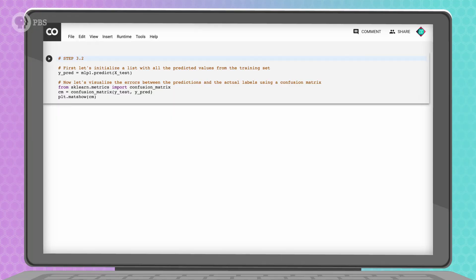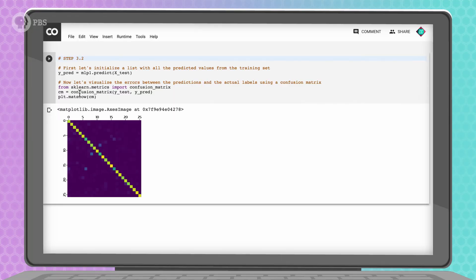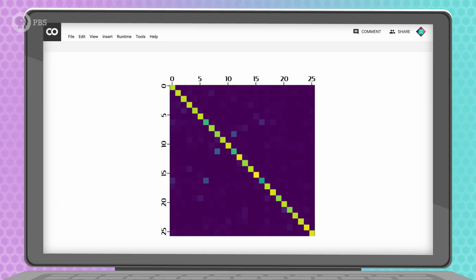To see where the network made most of its mistakes, we can create a confusion matrix, which we made in step 3.2. The color of each cell in the confusion matrix represents the number of elements in that cell, and a brighter color means more elements. The rows are the correct values, and the columns are the predicted values, and the numbers on the axes represent the 26 letters in the alphabet. So, 0 is A, and 1 is B, etc.